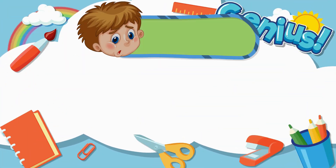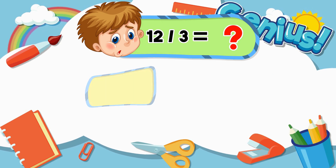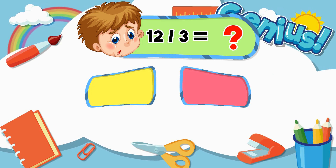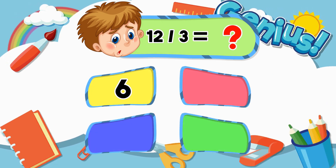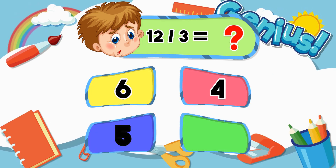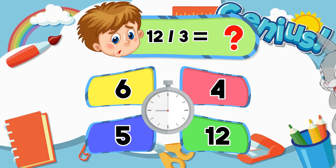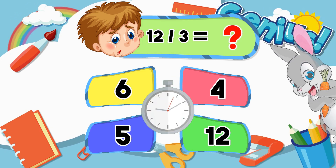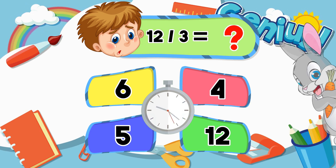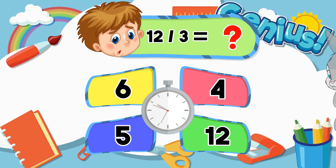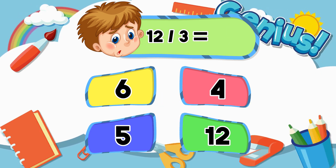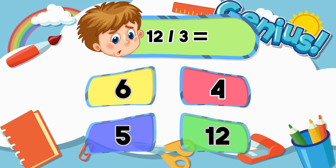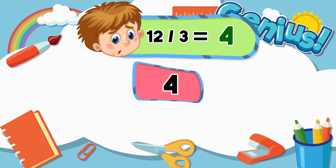What is 12 divided by 3? 6, 4, 5, 12. Answer: 4.